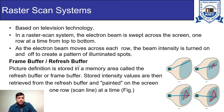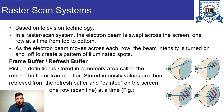In a raster scan system we have one memory called the frame buffer or refresh buffer. Picture definition is stored in this memory area. Whatever picture we have to draw, the information of that picture is kept in the frame buffer. Stored intensity values are then retrieved from the refresh buffer and painted on the screen one row at a time. The electron gun is connected with the frame buffer, and based on the picture definition stored there, the intensity is turned on or off to produce the image on the raster screen.